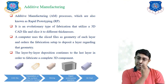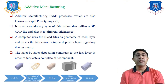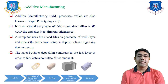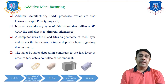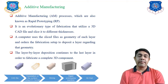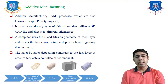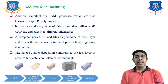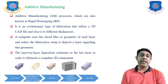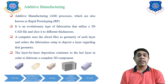In conventional manufacturing systems, there are subtractive manufacturing systems where material is subtracted from the workpiece to get the components. In additive manufacturing systems, the material is added to make the components.